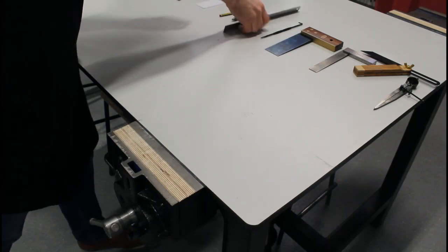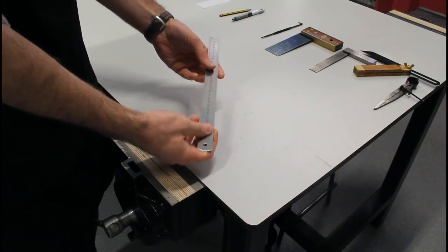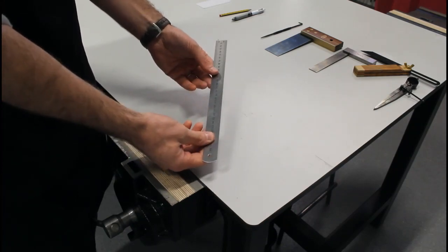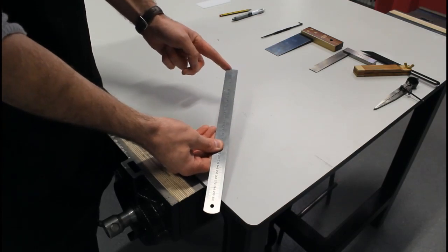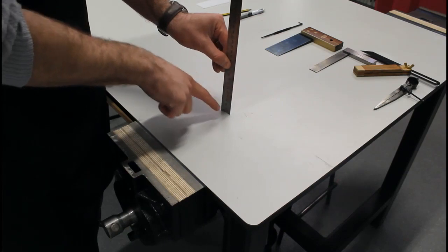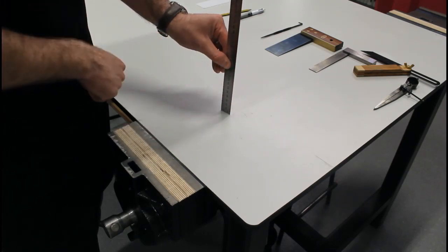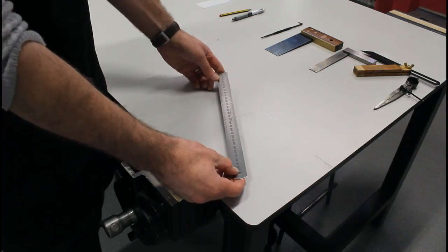Following on from that, we have our steel rule. This is different to a normal ruler as this starts from zero. So I can place that on the bench and read off the height of something. So that's zero to the height of something. It's in millimeters, it goes up to 300 millimeters.